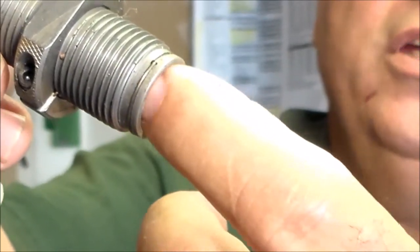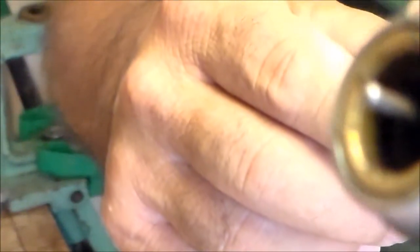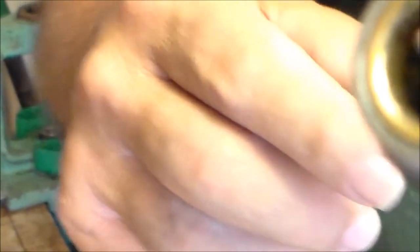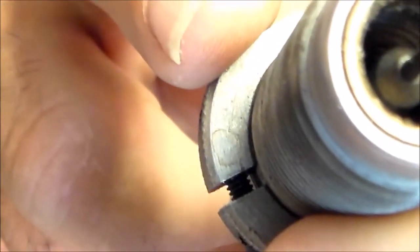What you want to do is make sure your decapping die has the decapping pin out three-sixteenths of an inch from the end of the die body, and that the collet inside or the expander ball is sitting back enough so it can clear the bottom of the case.